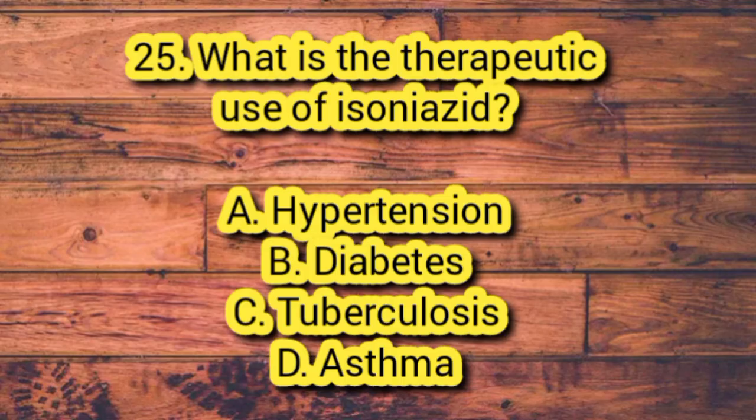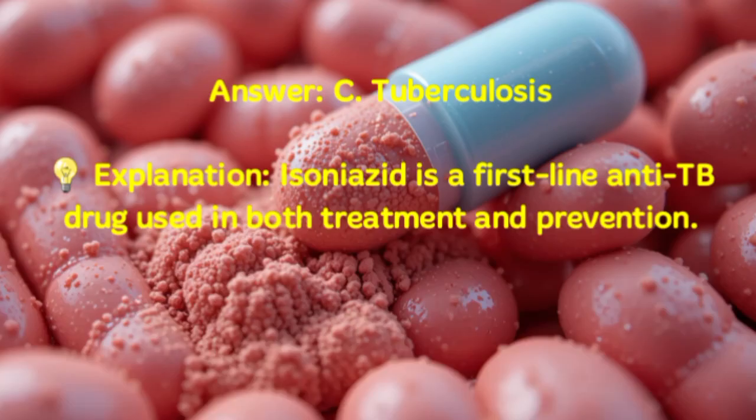Number 25. What is the therapeutic use of isoniazid? A. Hypertension. B. Diabetes. C. Tuberculosis. D. Asthma. Answer: C. Tuberculosis. Explanation: Isoniazid is a first-line anti-TB drug used in both treatment and prevention.